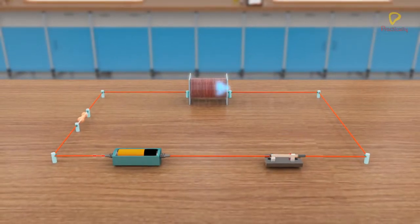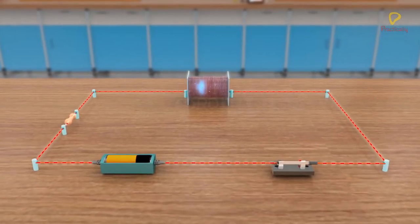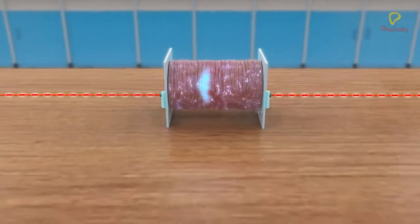When current passes through the solenoid, the magnetic field generated by each of its loops gets added.